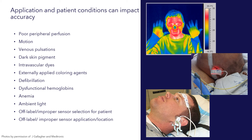Two of the last things that we want to talk about are off-label or improper sensor selection or use on the patient in the improper location. In the last picture, we see a finger probe placed on the patient's forehead. This is a transmission sensor being used as a reflectance sensor and can provide inaccuracies. Often when the sensor is used in this way, it will show an artificially high oxygen saturation reading, which may become problematic as the patient desaturates but the measured saturation with this probe does not reflect that change in saturation.